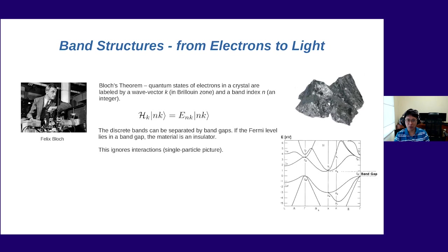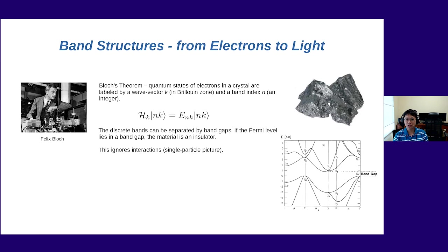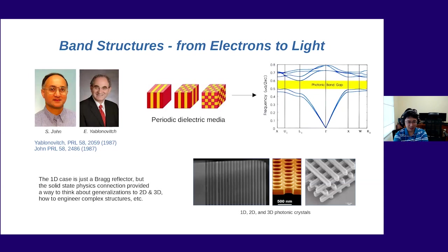Currents can flow freely through a partially filled band. This single-particle picture, which essentially ignores the electrostatic interaction between electrons, is actually able to give an extremely good account of how actual materials behave — and it's a long story beyond this talk's scope as to why. Solid state physicists throughout the 1950s, 60s, and 70s built on this to develop increasingly sophisticated and accurate theories of electronic properties of solids. Then during the 1980s something interesting happened.